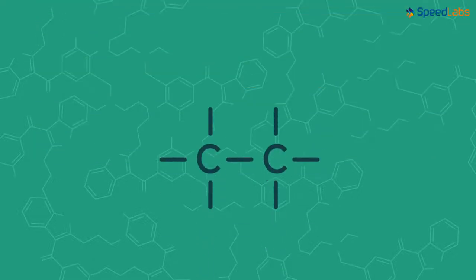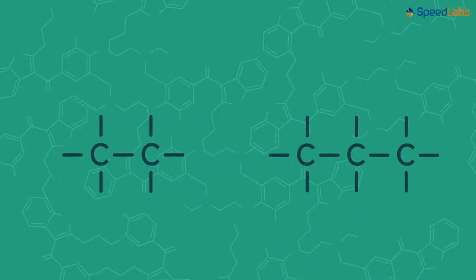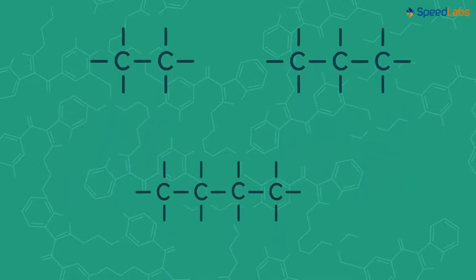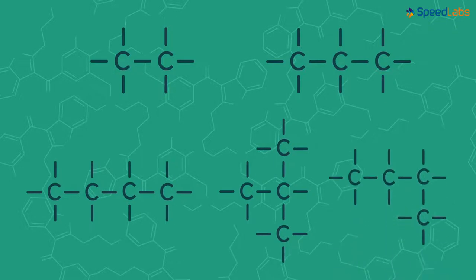We know how straight-chained hydrocarbons are - one long straight chain of all the carbon atoms. Many hydrocarbons with less number of carbon atoms are almost always straight-chained. However, as the number of carbon atoms in the compound increases, the bonding of carbon atoms with each other could change a bit.